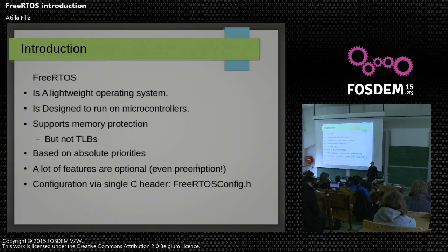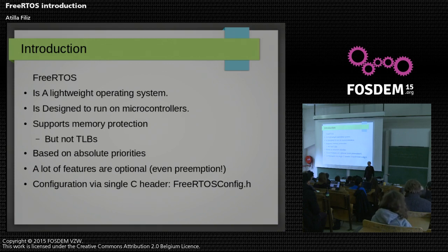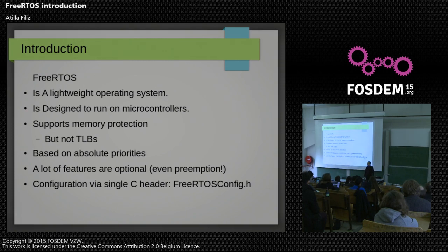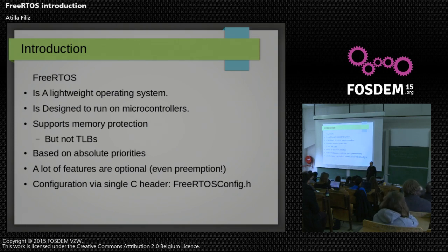FreeRTOS is a pretty lightweight operating system. It's designed to run on microcontrollers, and the operating system itself takes 5 to 10 kilobytes in flash and about 300 bytes of RAM. It does support some memory protection if your CPU core supports it, but it doesn't do any address translation, so no TLBs. It puts tasks in absolute priorities, which means a higher priority task always preempts a lower priority task. Even preemption is optional, so you can slim it down to pretty small sizes, and all the configuration is done by a C header — basically a bunch of defined symbols.